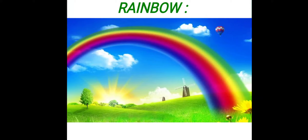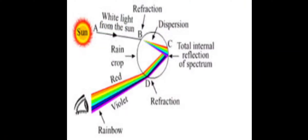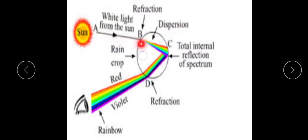The rainbow is formed by spherical droplets of rain. As shown in the diagram, rainbow formation involves three effects: dispersion, refraction, and total internal reflection. When a ray of light coming from the sun enters a water droplet, refraction takes place first - the surrounding air is one medium and the water drop is another medium, causing a change in the path of light.